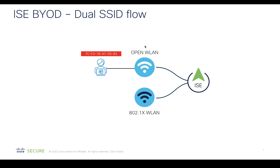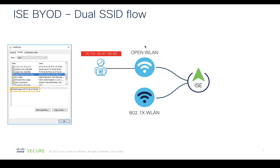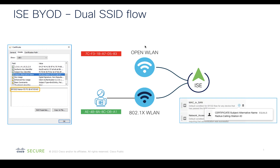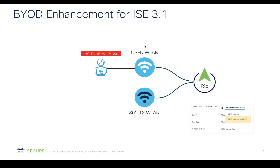Consider an endpoint being onboarded through the dual SSID BYOD service. When the endpoint connects to the open SSID with one MAC address, ISC provisions a certificate to the endpoint imprinted with the MAC address seen by ISC in the SAN field. The endpoint then connects securely over the secure SSID using that certificate. However, when the same endpoint reconnects to the secure SSID, due to MAC randomization, the MAC address seen by ISC is different from the MAC address in the certificate SAN field — a clear mismatch.